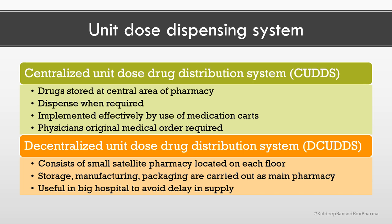The second way is the decentralized unit dose drug distribution system. This system consists of small satellite pharmacies located on each floor of the hospital or in each building or premises of the hospital. Centers such as storage, manufacturing, and packaging serve the satellite and become the main pharmacy of the system. Medication cards are used for the delivery of drugs, and this method is useful in big hospitals to avoid delays in the supply of medication.